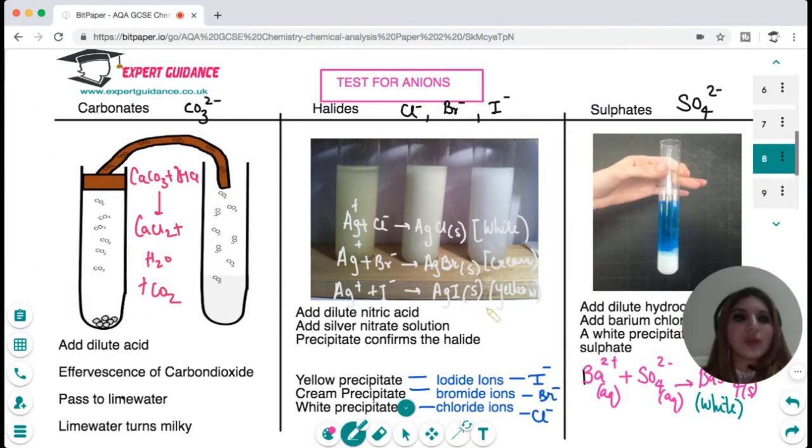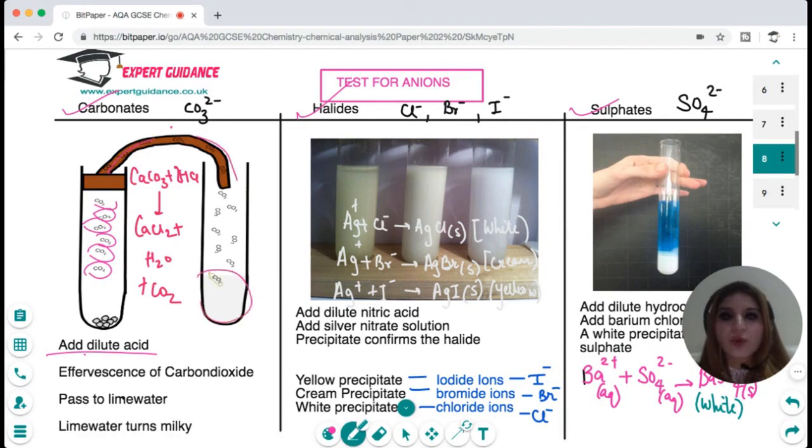After the metal ions, you should also know what are the non-metal ions or the anions present in your salt. Anions could be carbonates, halides, and sulfates. For carbonate, what we do is we add dilute acid and we see the effervescence, and that effervescence is for carbon dioxide. To confirm that it is carbon dioxide, we pass it through lime water and the lime water should turn milky.